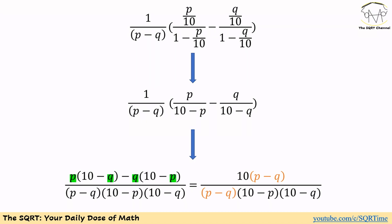Using P minus Q, 10 minus P, and 10 minus Q for the denominator, we end up with P times (10 minus Q) minus Q times (10 minus P) in the numerator. Simplifying: the 10P and 10Q terms cancel, and we have minus P squared Q plus Q squared P, leaving us with 10 times P minus Q on top, and P minus Q times (10 minus P) times (10 minus Q) on the bottom.